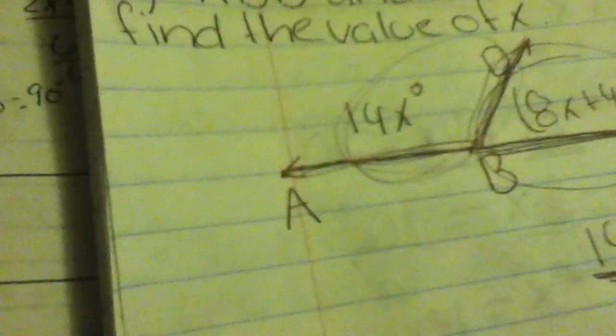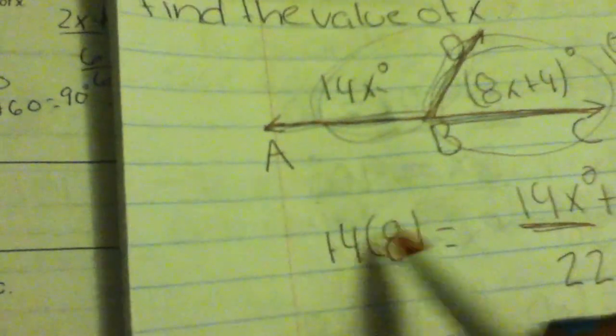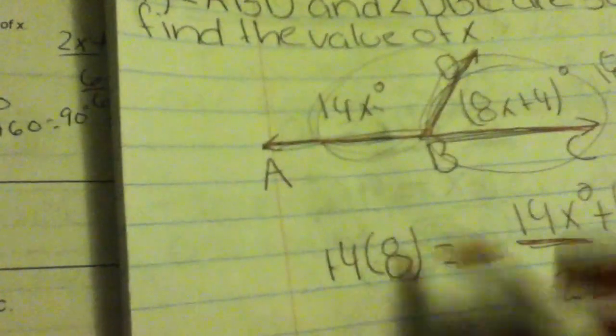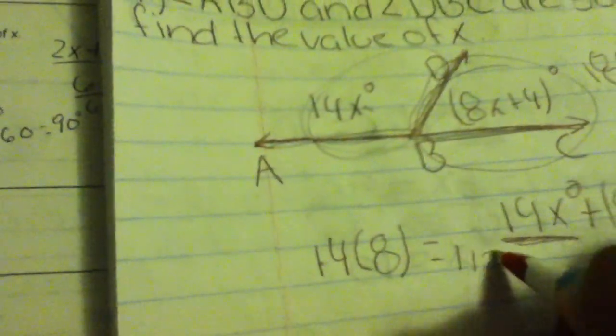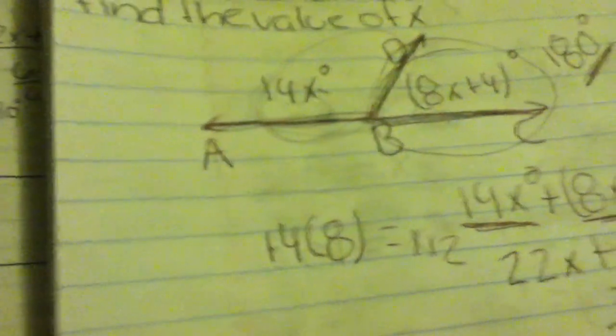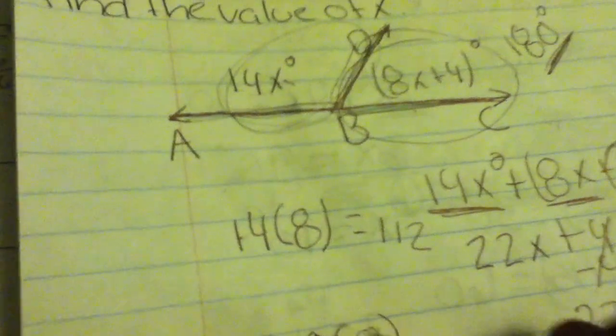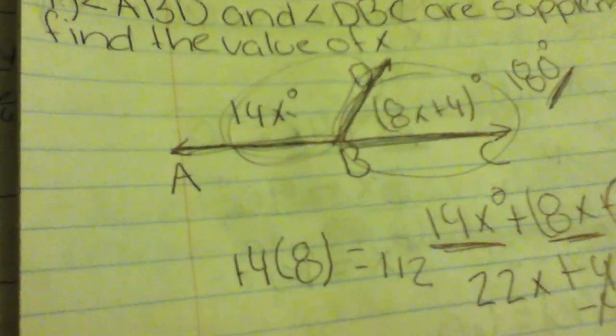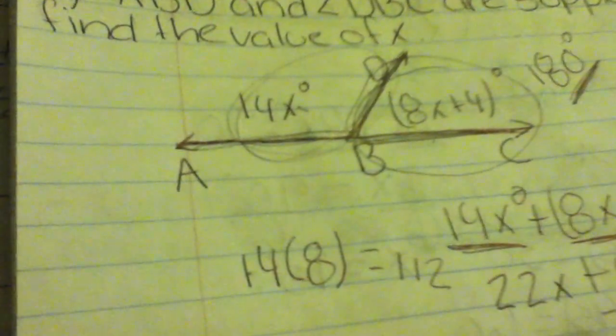If you want to double check, you substitute the x. Put 8 into the first expression: 14 times 8 equals 112. Do the same to the other side: 8 times 8 is 64, and we can't forget about our plus 4, so you add 4 to that and get 68.